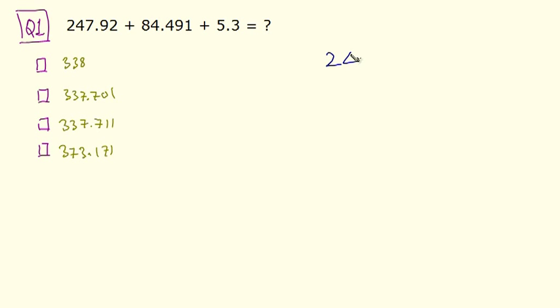I have the number 247.92. Then below that, I would write 84.491, keeping the decimal point in its position. So here is the decimal point. On the left, I have 84. On the right, I have 491.